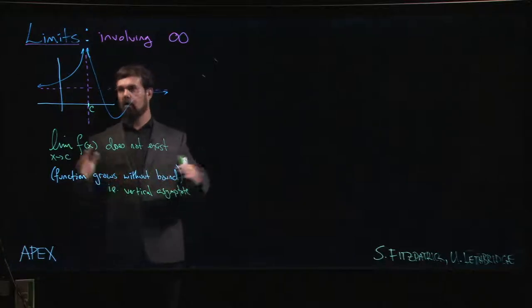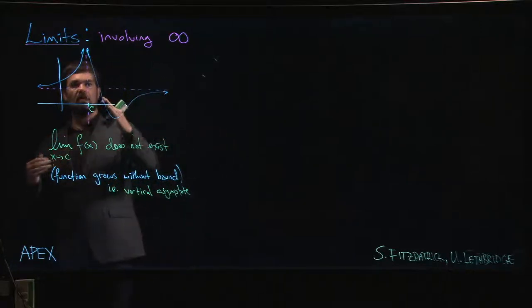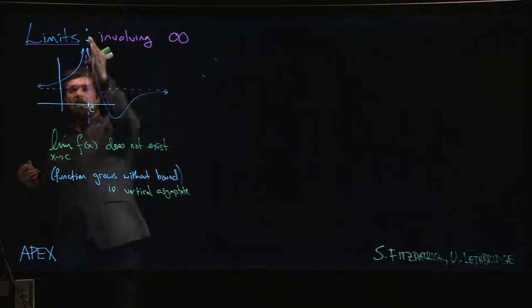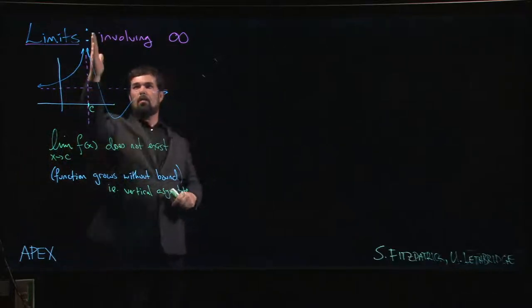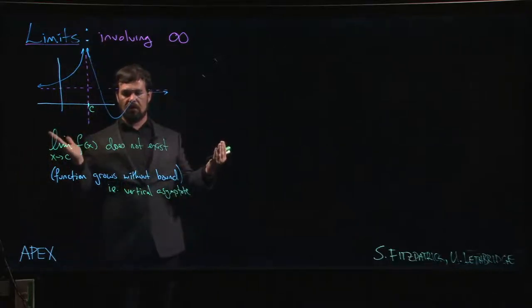A vertical asymptote is a place where the function, as we move towards that vertical asymptote, as our x values get close to that vertical asymptote, our y values increase without limit. They go on forever. We talk about this going off to infinity.